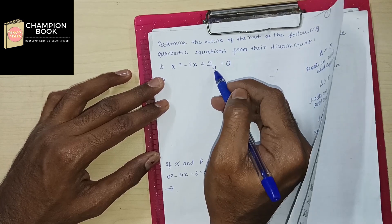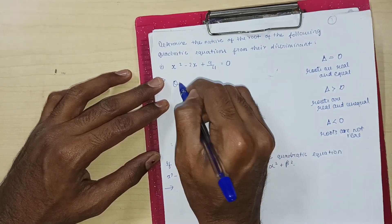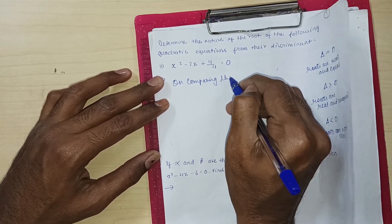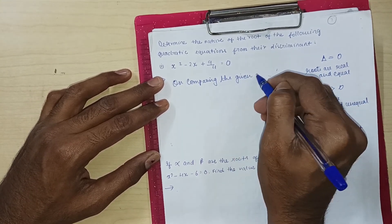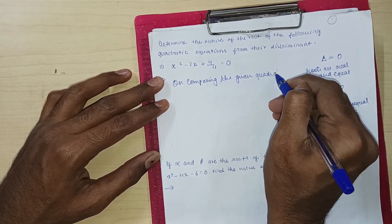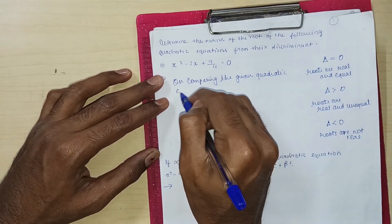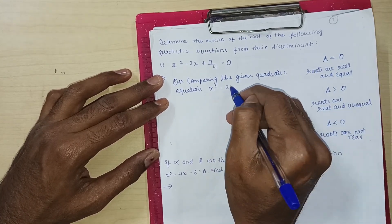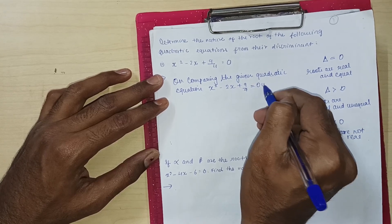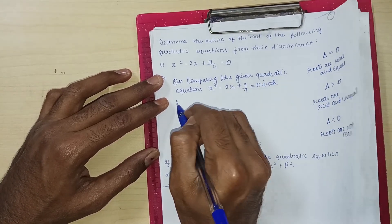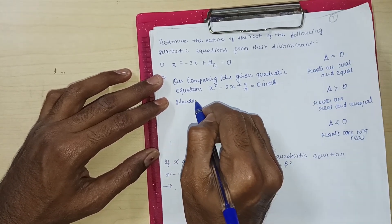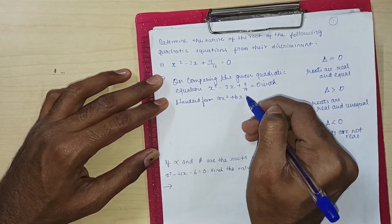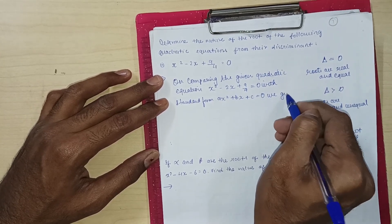X square minus 2x plus 9 upon 4 is equal to 0. On comparing the given quadratic equation x square minus 2x plus 9 upon 4 equals 0 in standard form with standard form, what is that form? X square plus bx plus c is equal to 0, we get